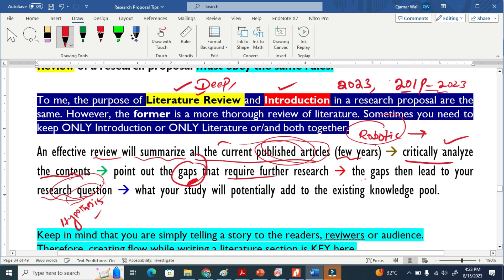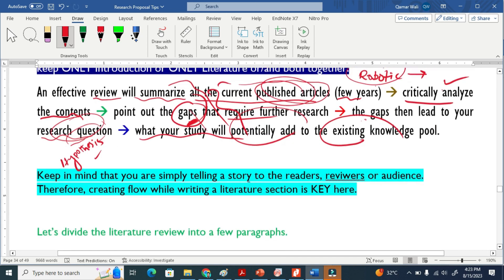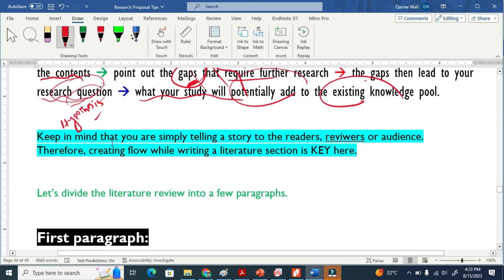Once we sort out and solve that problem, this means what our study will potentially add to the existing knowledge. So these things we have to include in writing a literature review. It is not that easy to have a flow. Flow is the key here. It takes time and needs very hard work.